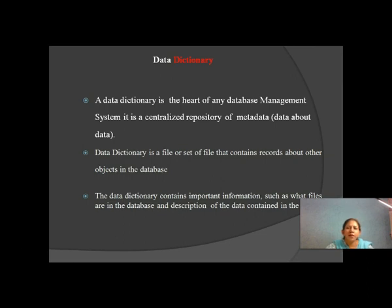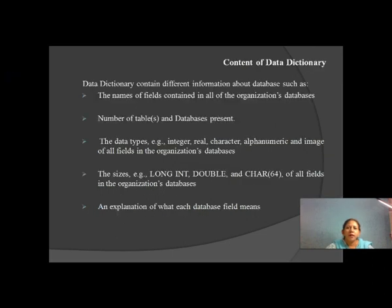The data dictionary is a file or set of files that contains records about other objects in the database. It contains important information such as what files are in the database, description of the data contained in the file, the name of the database, and all of the files contained in the organization's database.